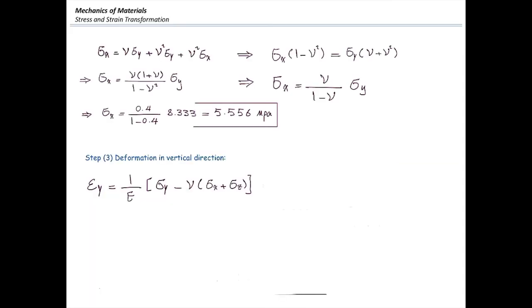Sigma x is nu divided by 1 minus nu. Add sigma z to that which would have the same value. That would give us 2 multiplied by nu divided by 1 minus nu. And then multiply that by the nu before that parenthesis.